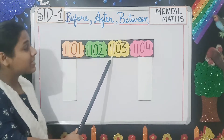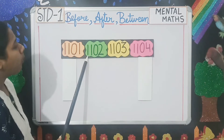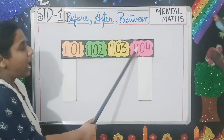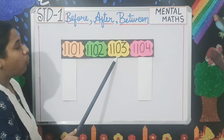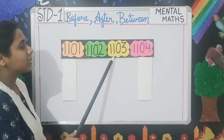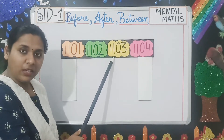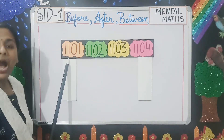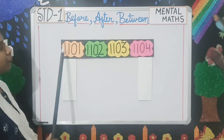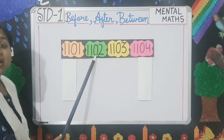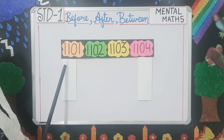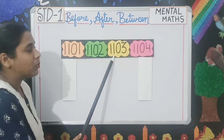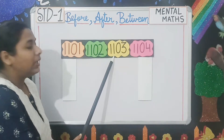Clear students? In the same manner, for between: 1102 and 1104 are the two numbers. If I ask what comes between the two numbers, you will say 1103. For finding the after number, you do forward counting. For finding the before number, you do backward counting. And for between, you find which number comes between the two numbers.